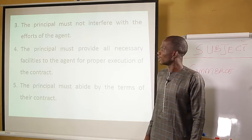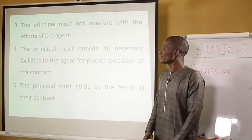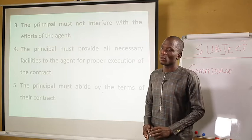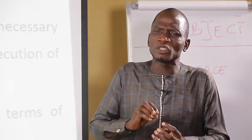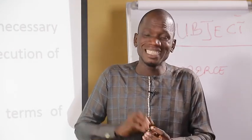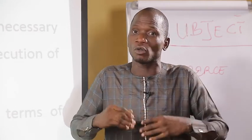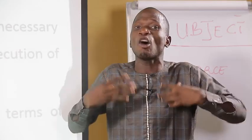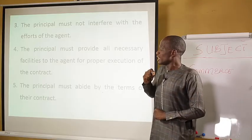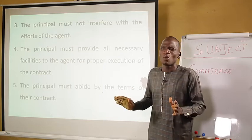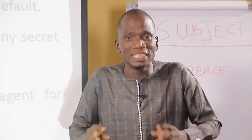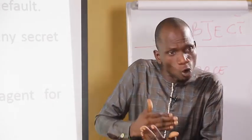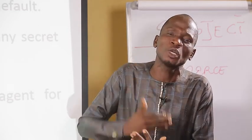The fourth duty of the principal is he must provide all necessary facilities to the agent for proper execution of the contract. Whatever the agent requires from the principal for the purpose of carrying out the agency, it is the duty of the principal to provide such facilities. The fifth duty is the principal must abide by the terms of their contract. Whatever was agreed from the beginning, the principal must put it into consideration and abide by it.